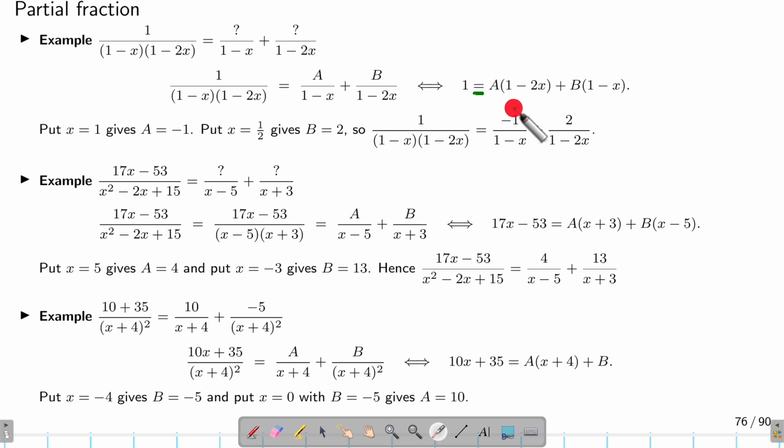That means I can put any x in here and it will be true. I'm going to put x such that one of the brackets disappears. For example, if I put x = 1, I will have 0 here. Then it will be 1 - 2, that's negative 1, so A is negative 1.